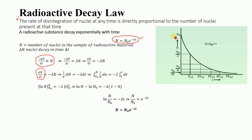Here is the graph which represents the number of disintegration of nuclei with respect to time, or with respect to every half-life. After every half-life, the number of nuclei decreases due to radioactive decay, which means the number of nuclei in the parent radioactive material is always greater than the number of nuclei in the daughter nuclei, because after every half-life, half of the parent nuclei decay to produce the daughter nuclei.